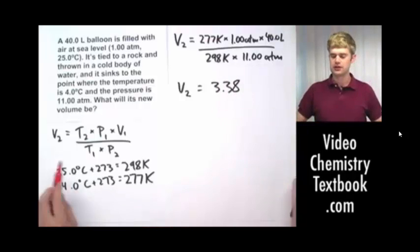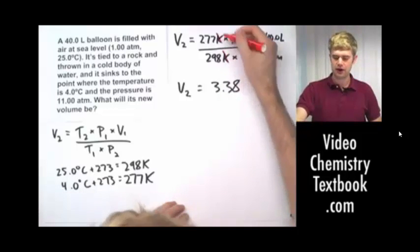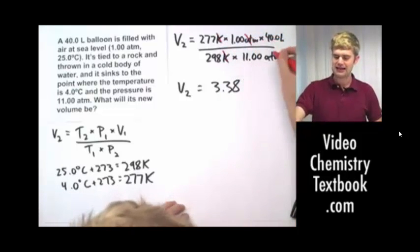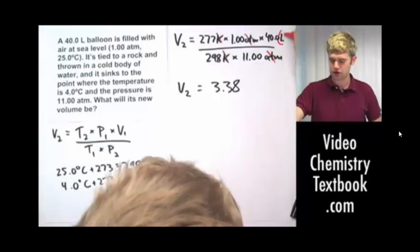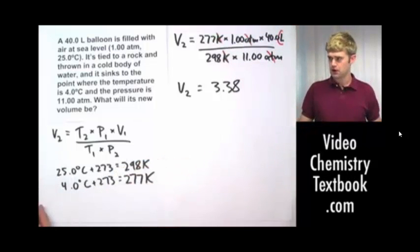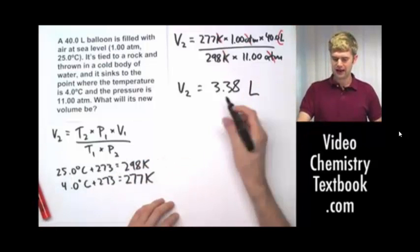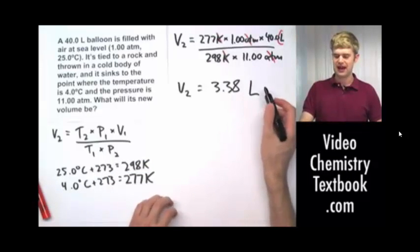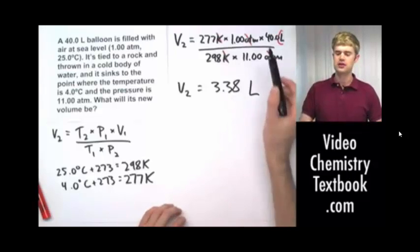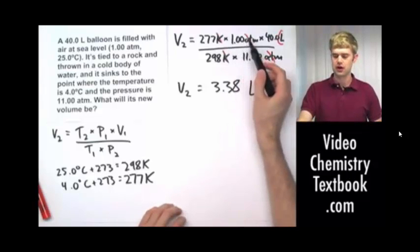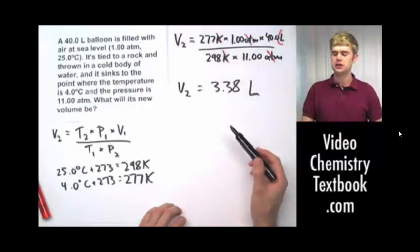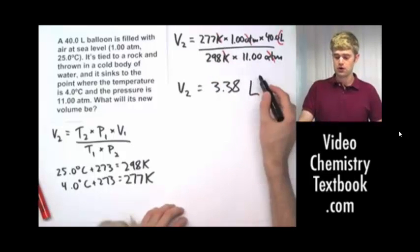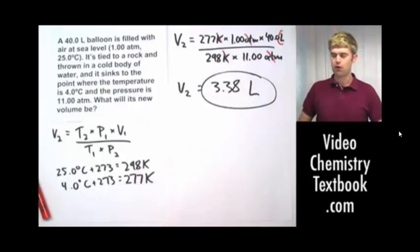Now, what are the units? Kelvin over Kelvin cancels out, ATMs over ATMs cancel out, and we're left with liters. So the final answer is 3.38 liters. That's rounded to three significant figures, because three significant figures is the lowest number of significant figures in the given data.